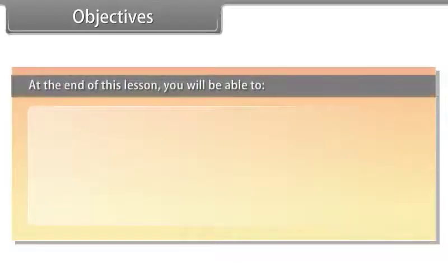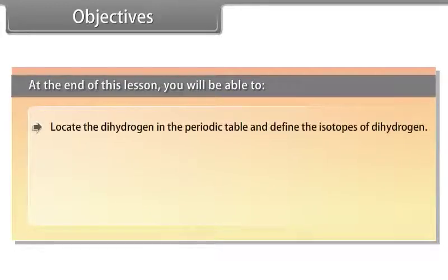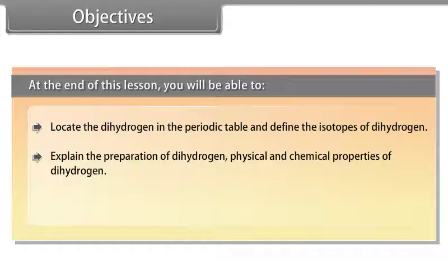Objectives. At the end of this lesson, you will be able to locate the hydrogen in the periodic table and define the isotopes of hydrogen, explain the preparation of dihydrogen, physical and chemical properties of dihydrogen, and explain hydrides.